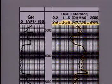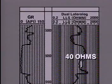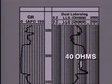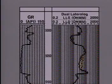Our log presentation is on a logarithmic scale from 0.2 to 2,000 ohms. Note that the shallow lateral log reads significantly less resistivity, about 22 ohms, than the deep lateral log, which reads about 40 ohms, thus reflecting the influence of low resistivity saline mud filtrate in the invaded zone. The deep lateral log, with its higher resistivity reading, indicates possible hydrocarbons in the uninvaded zone.